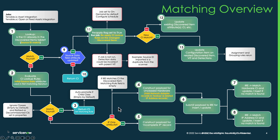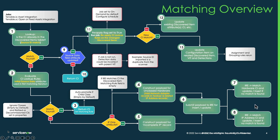If all we have is an IP address, it's going to construct a payload for an incomplete IP class of CI. If it has a net BIOS name, an FQDN, or something other than IP, then it's going to construct a payload for an unclassed hardware record. Depending on what type it is, we then submit it to the IRE. The IRE will go ahead and create the appropriate class and return that new CI record as the match.